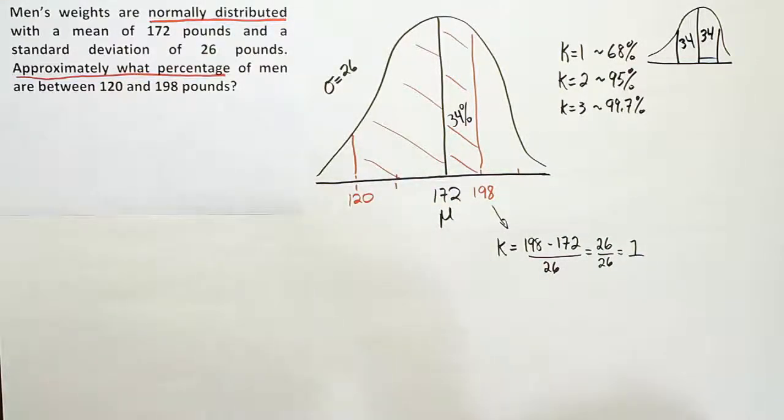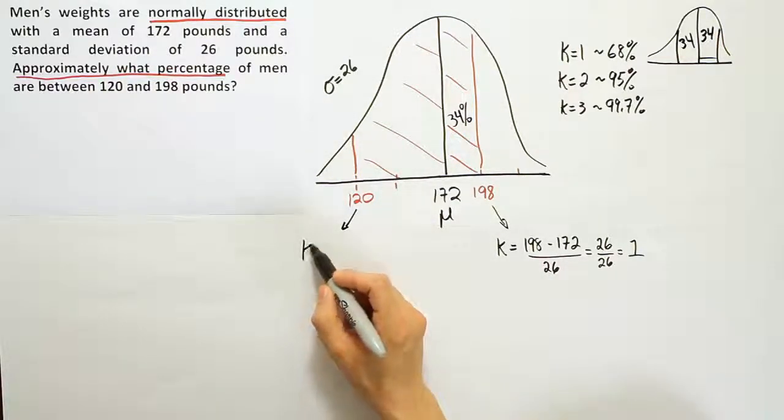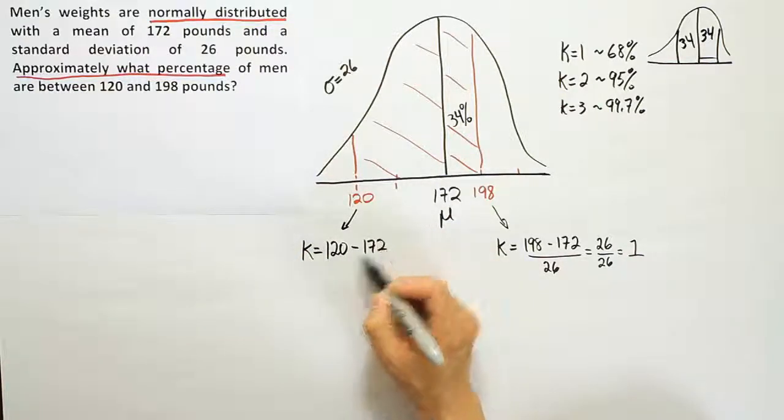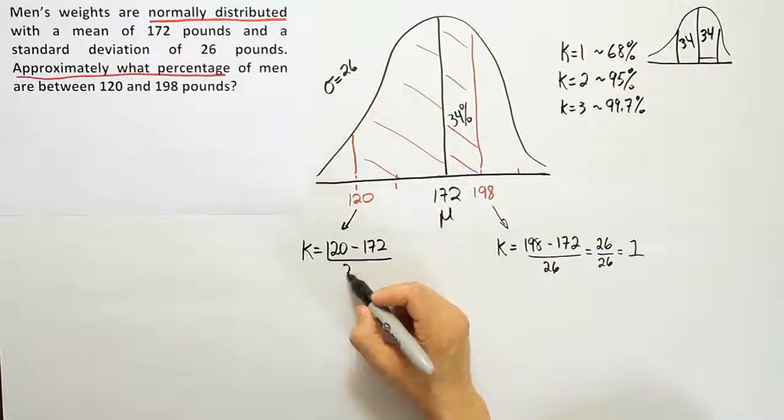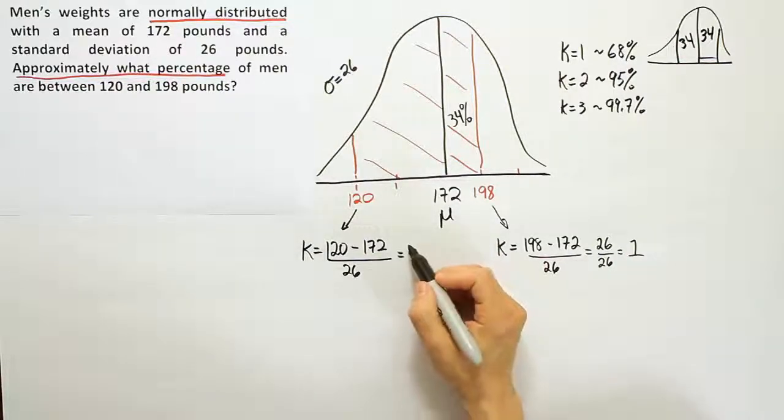Let's take that 120 and plug it into the k formula. k is equal to 120 minus the mean of 172 and divide by the standard deviation of 26. If I do 120 minus 172, I'm going to end up with a difference that is a little larger, it's minus 52.